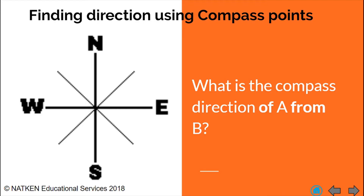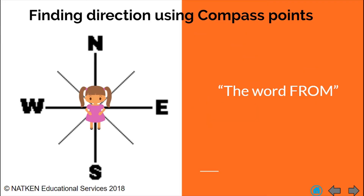First, we're looking at finding direction using compass points. Usually your question would be set up like this: what is the compass direction of somewhere from somewhere else? So what is the compass direction of A from B? We have highlighted the word 'from.' From is important. When you think of the word 'from,' think of it in terms of where you're born, where you've started, where the beginning is. From is our beginning — where we are starting.